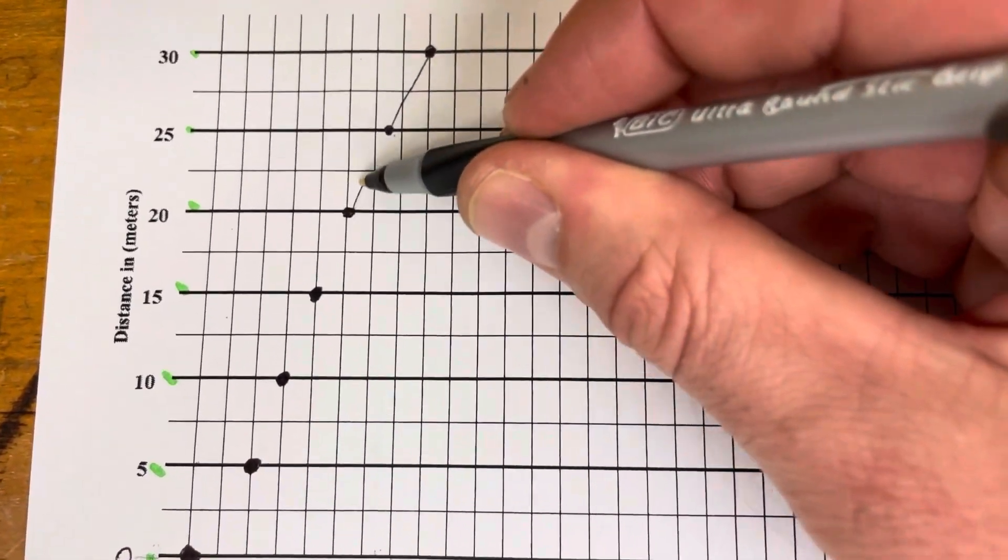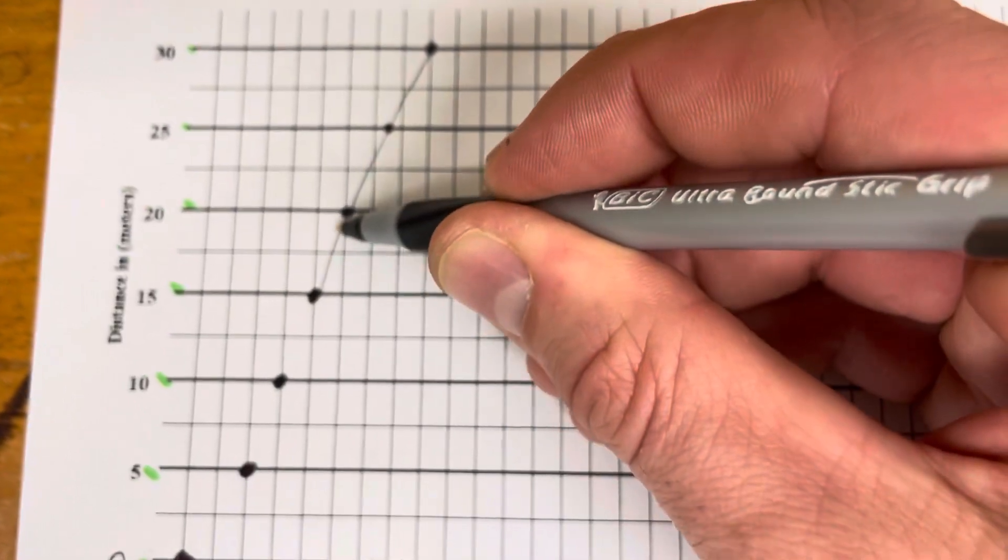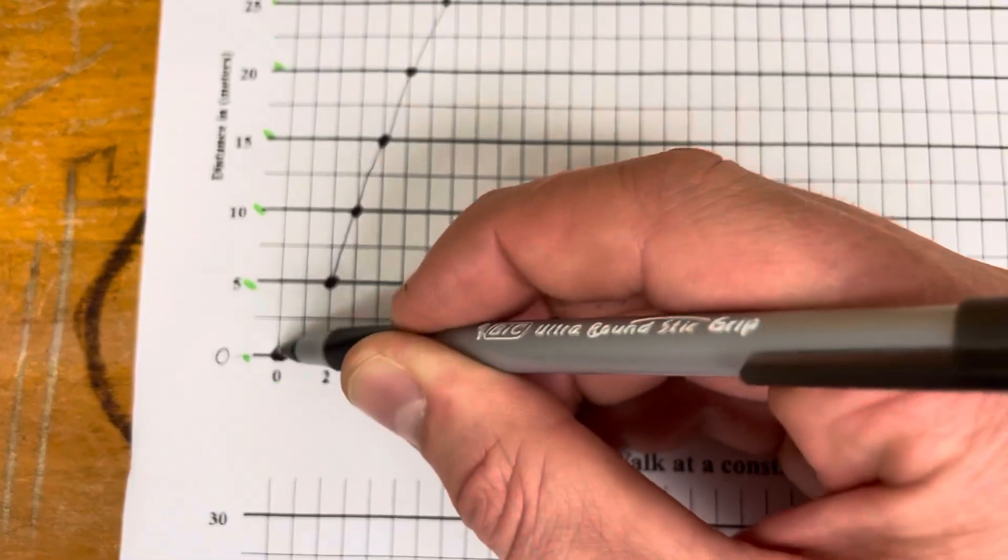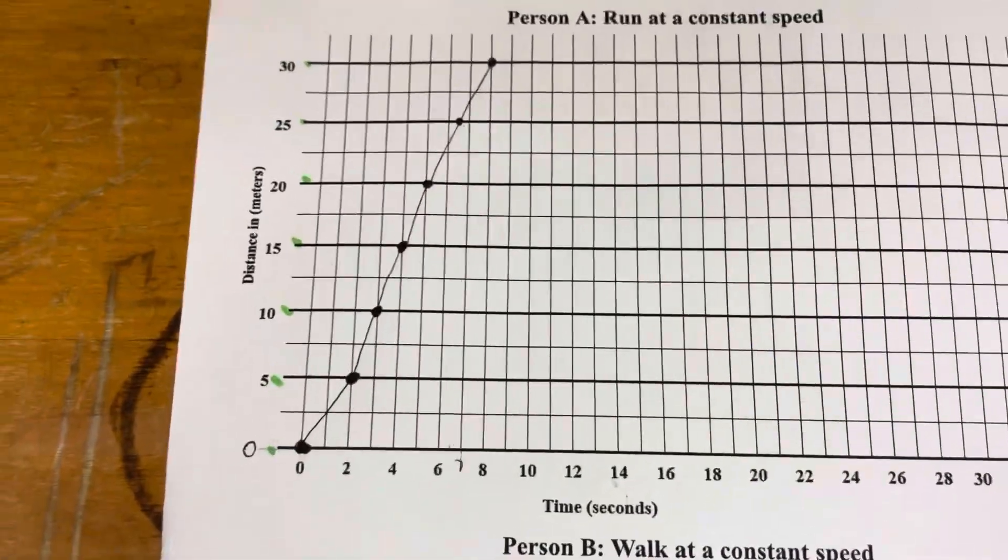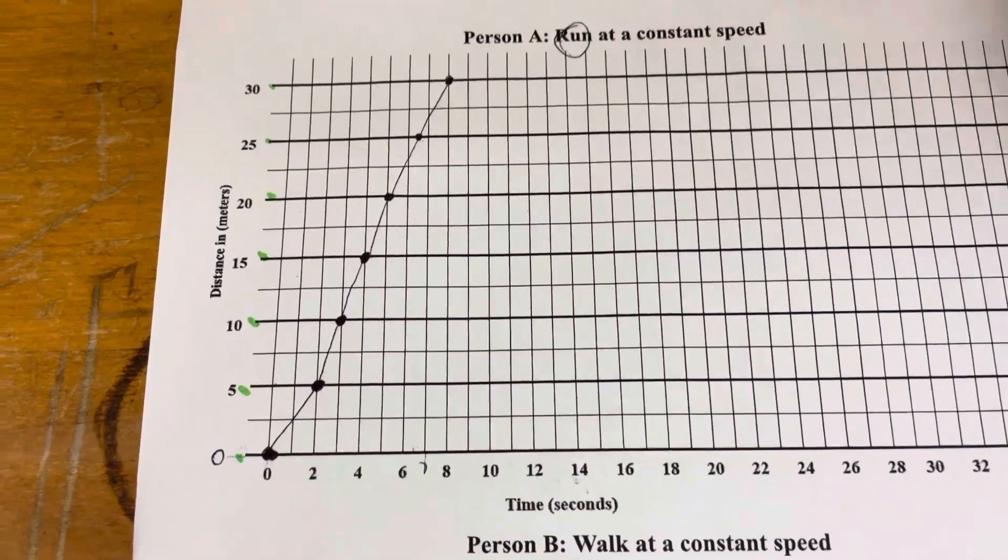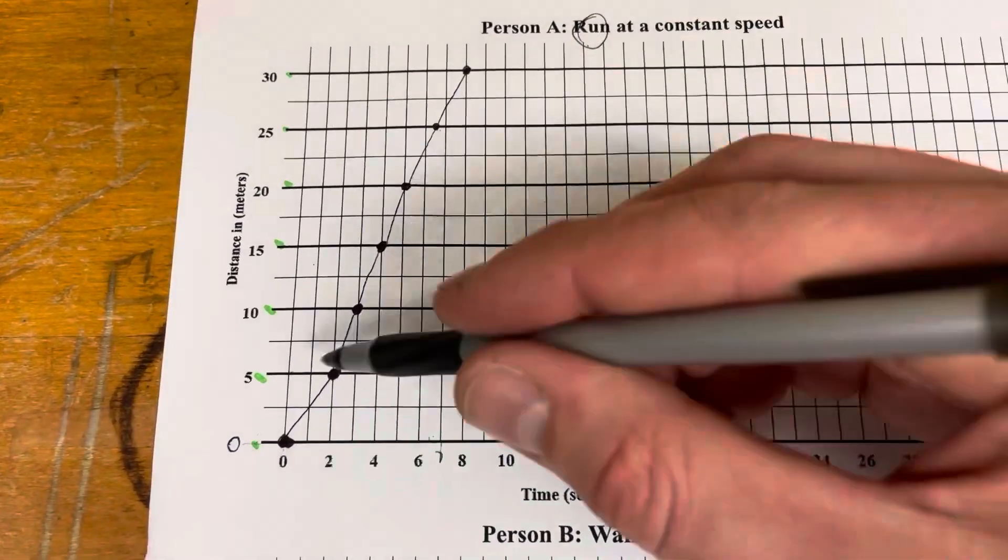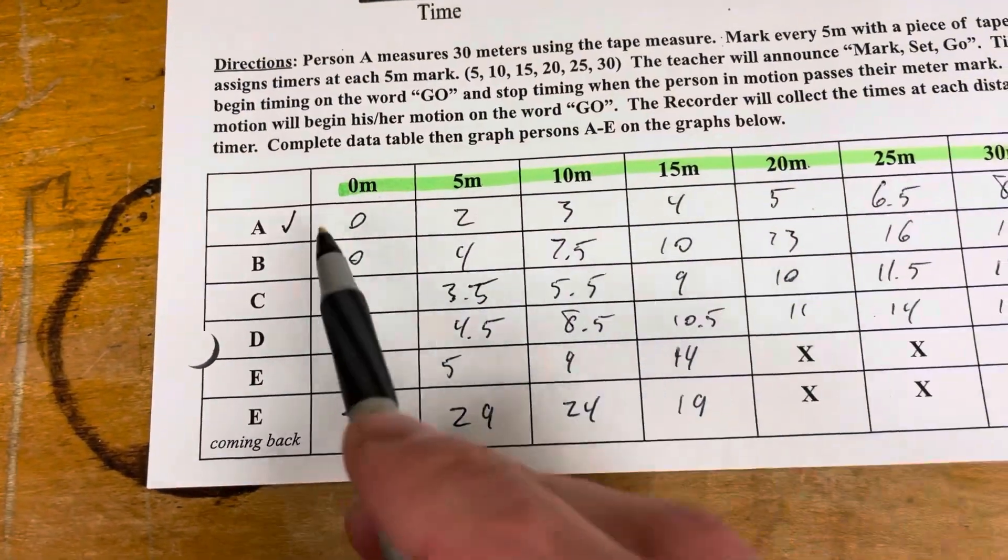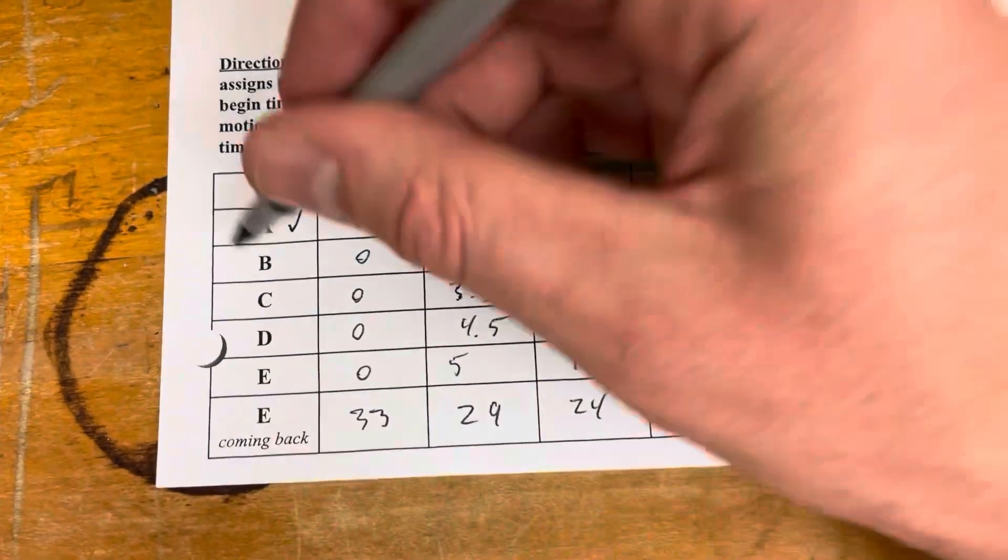Now we can connect these lines with a straight edge, or I'm just doing it freehand because I'm recording this. This is totally acceptable, and you can connect those dots. Remember this person is running, so take note of the shape of the graph when you're answering questions later. I have done person A, so I'm going to check that off.